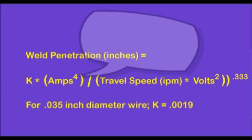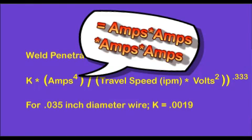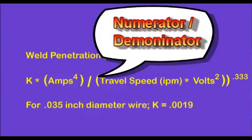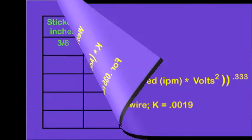Note the most powerful parameter increasing penetration is amps, which is multiplied by a power of 4, versus increasing travel speed, which is in the denominator. That intuitively we can understand will decrease penetration.